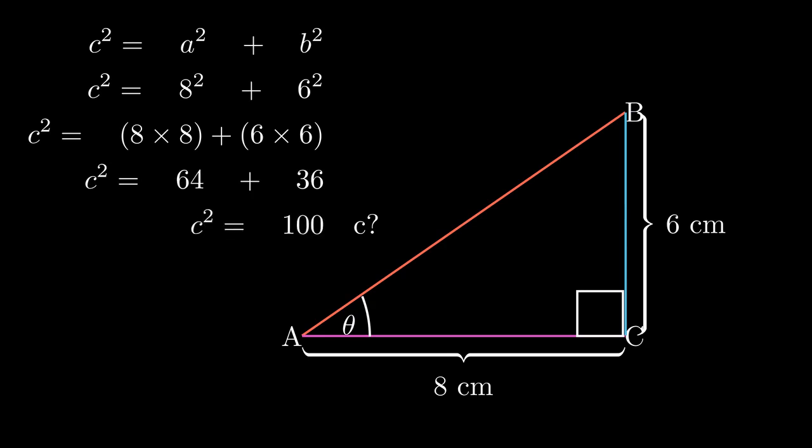So c squared will be equal to 64 plus 36, which is 100. We're going to find the square root of c squared and the square root of 100, which gives us c equals 10 cm. Very simple and straightforward.